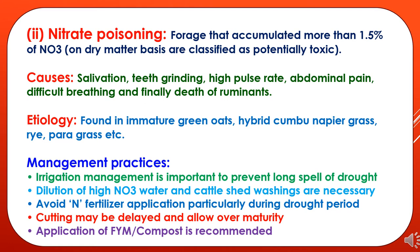To avoid HCN poisoning, harvesting for fodder at the heading stage at 50% flowering, and drying or hay making, is recommended. The second toxic constraint is nitrate poisoning. Forages that accumulate more than 1.5% nitrate on a dry matter basis are classified as potentially toxic. Symptoms include salivation, teeth grinding, high pulse rate, abdominal pain, difficult breathing, and finally death. It is found in immature green oats, hybrid Napier grass, rye, and para grasses.